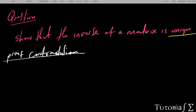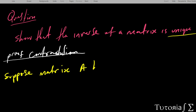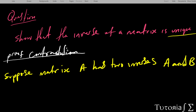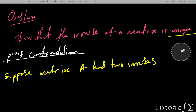Proof by contradiction works by writing a contradiction with the statement. So instead of a matrix having one inverse, we contradict that. We suppose matrix A has two inverses, K and B.